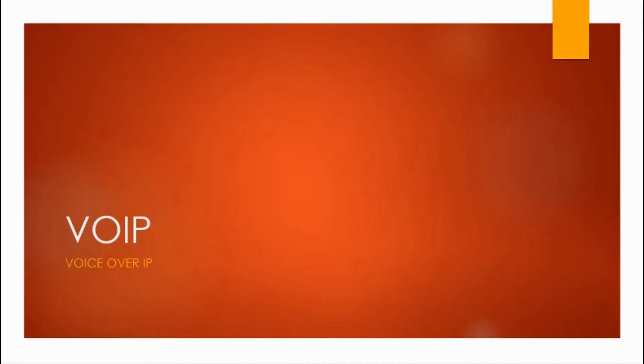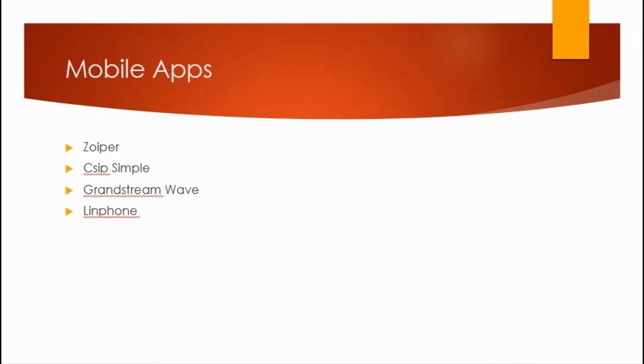In today's tutorial, we are going to see how to configure the VoIP account in a VoIP app on your mobile. VoIP is a mobile app-based service which can be used to initiate and receive landline, mobile, and VoIP calls within and outside the telecom operator network. Calls can be made to any landline, mobile, or VoIP number from the app without using a SIM, over the internet. This is an IP-based service that works on the internet.